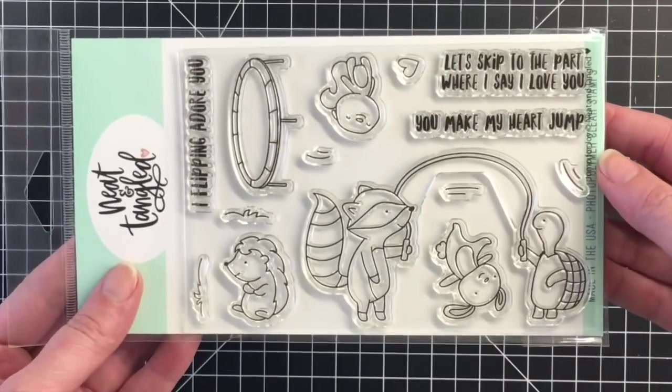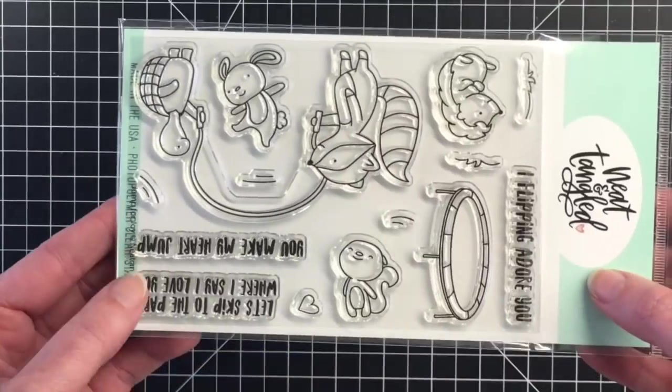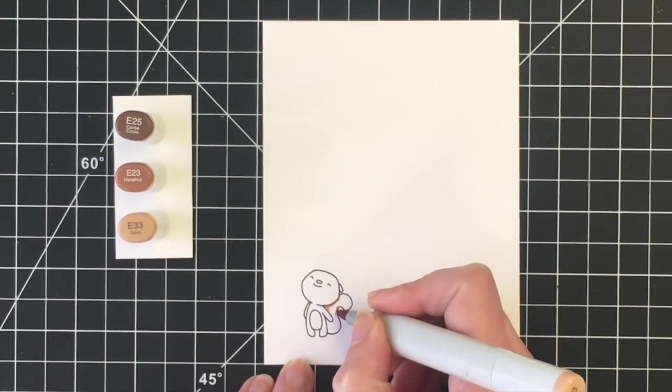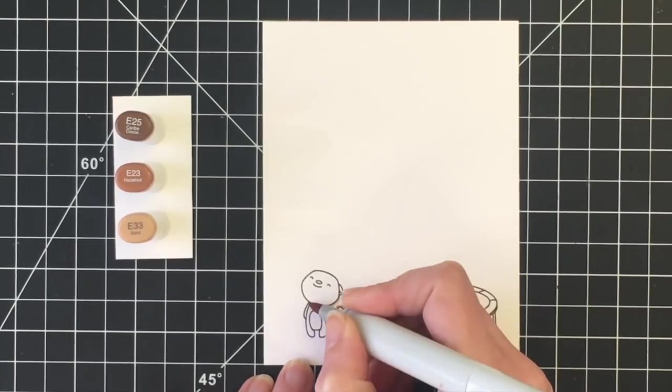This stamp set is absolutely adorable. It has some great sentiments such as I flipping adore you, you make my heart jump, and let's skip to the part where I say I love you. For today's card I'm just going to be using two of the images from the stamp set.